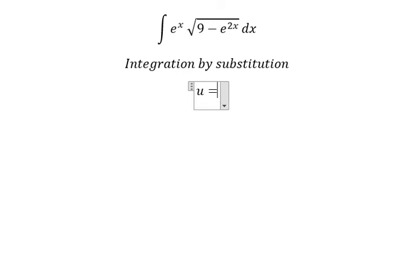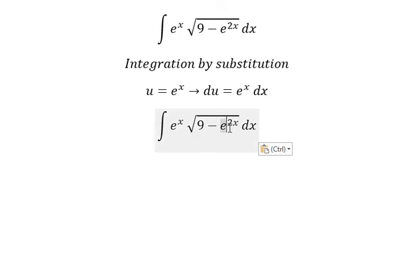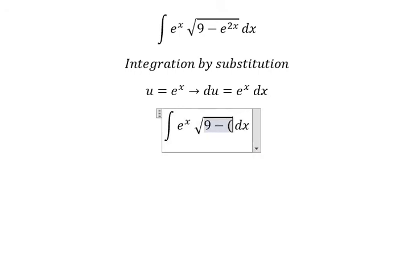We put u equal to e to the power of x. If we differentiate both sides, we got like this. E to the power of 2x, we change this by u. E to the power of x dx we change by du.